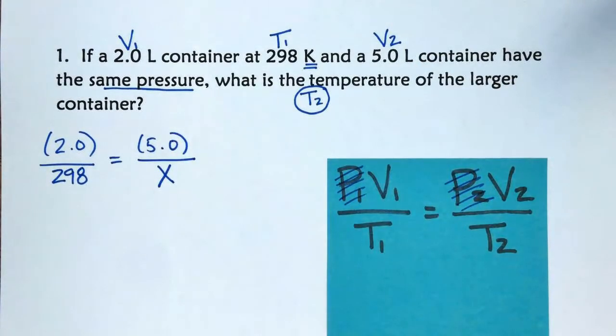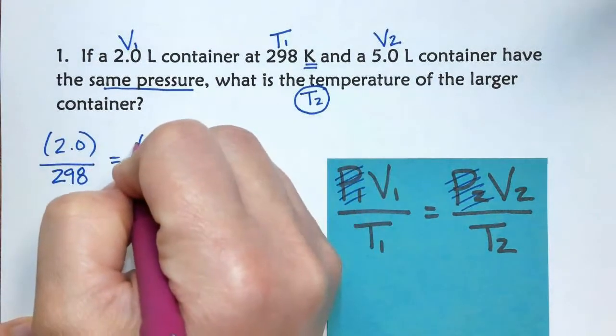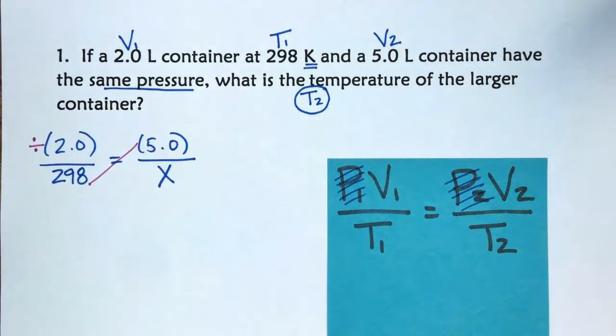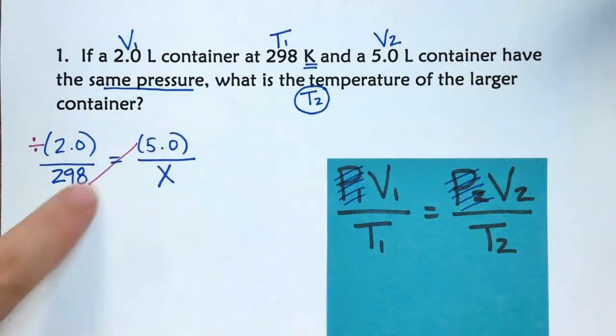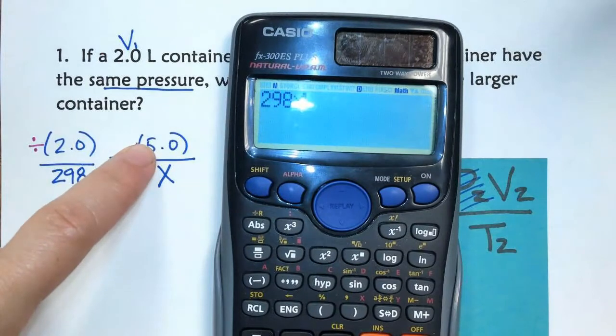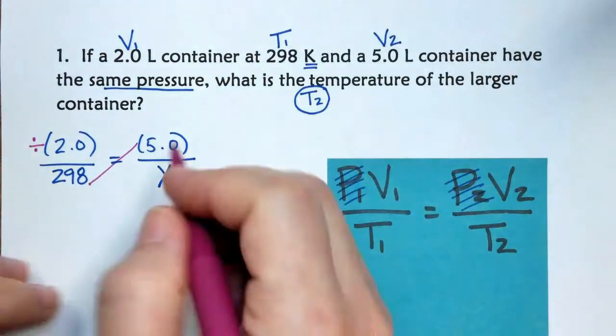And now we're going to use our good old classic cross multiply. Remember, don't start your cross with the X, we'll do the cross opposite the X, and then whatever is left over is going to be divided by. So we're going to cross multiply opposite the X, 298 times 5, and then I'll just divide by that 2. In order to get the answer, 745.